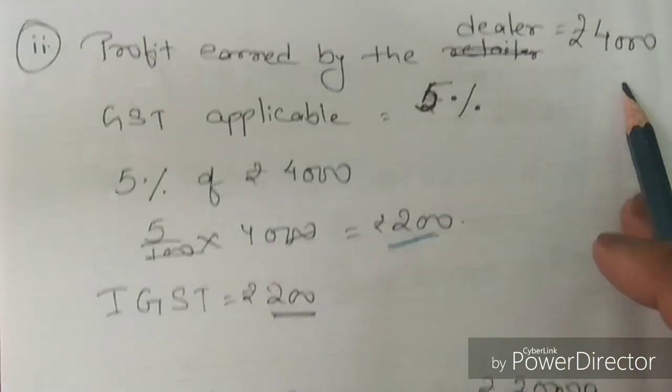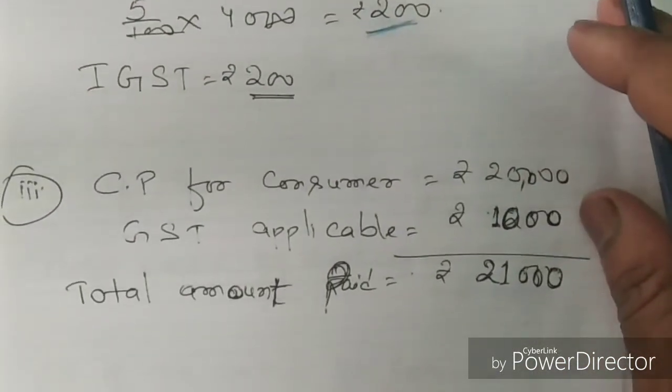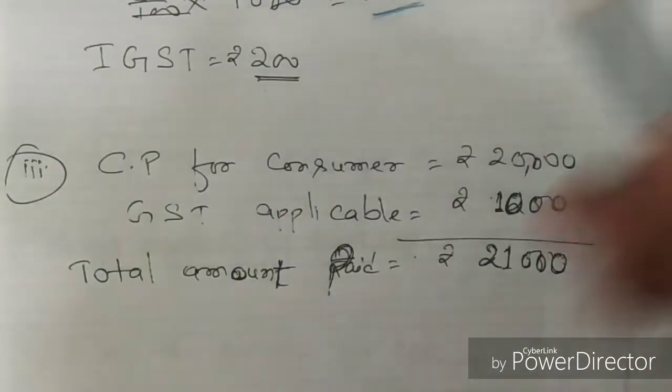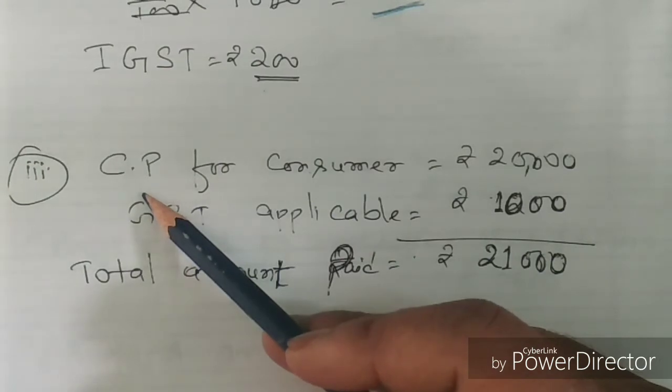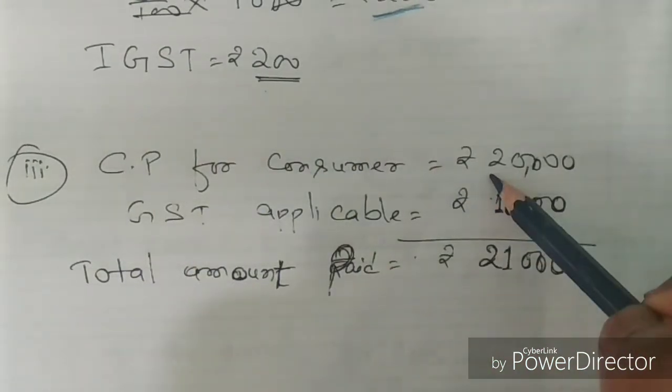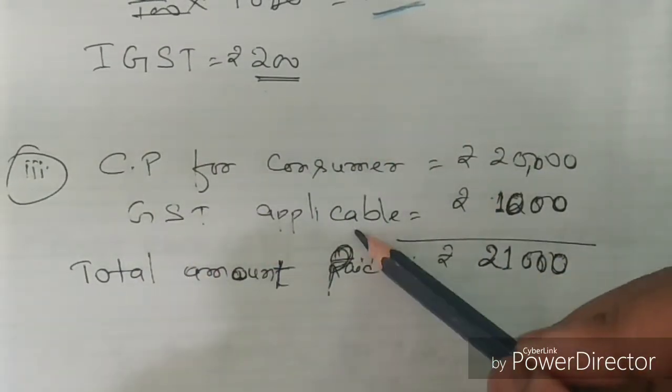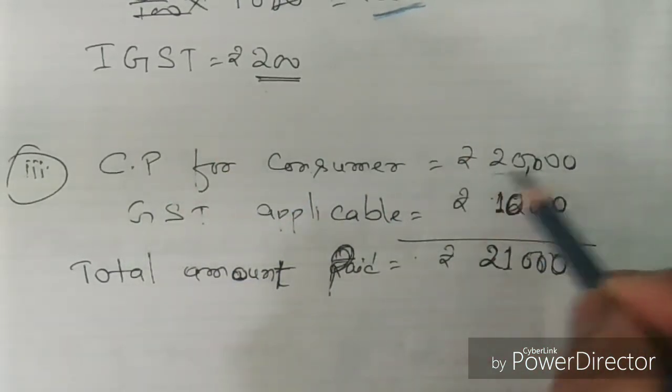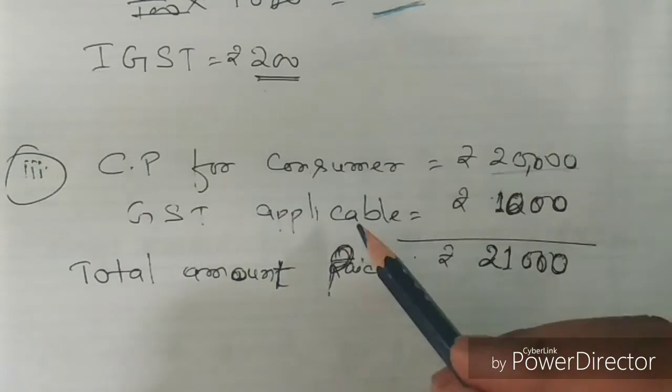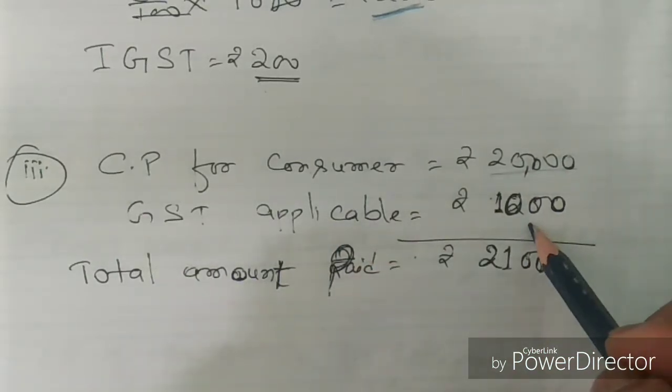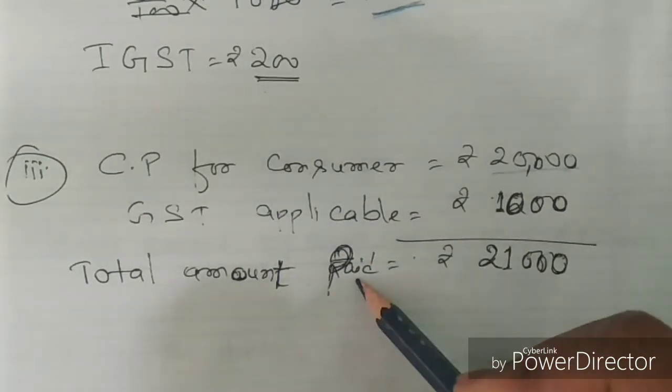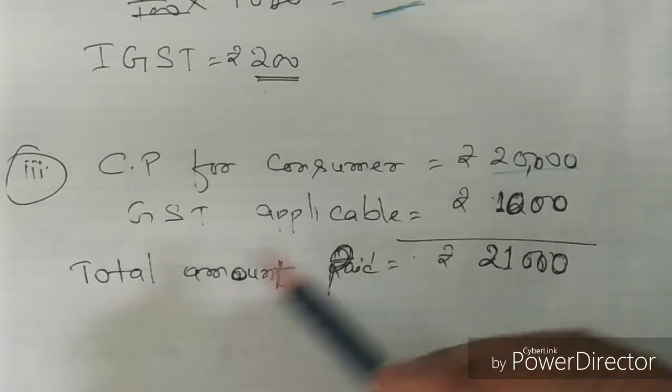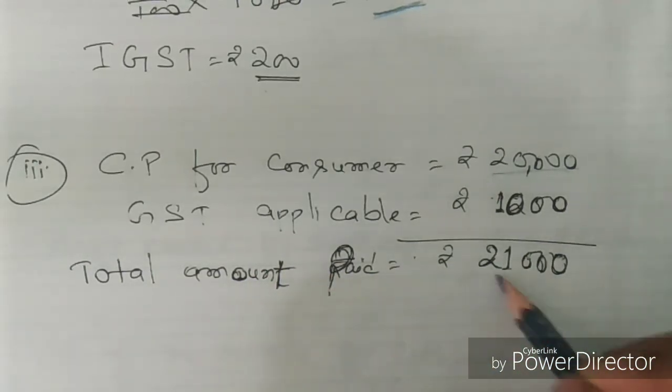The third part is the amount paid by the consumer. The consumer will pay the cost price plus the GST applicable. So the cost price of the article for the consumer was Rs 20,000 and the GST applicable for him is Rs 1,000. Therefore, the total amount that he will pay is Rs 21,000.